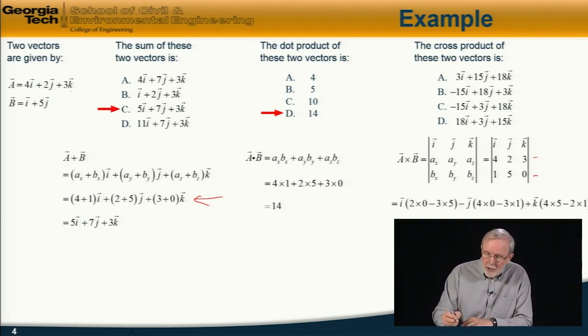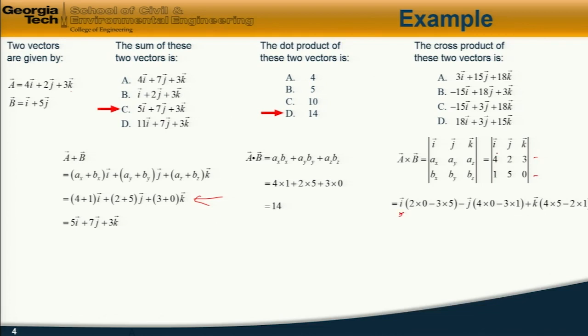So to compute this, we start with the i term here, i, cross out the row and column. And that is equal to 2 times 0 minus 3 times 5. Next, we form the j component. Cross that out. And again, because the signs alternate, that's going to be minus j multiplied by 4 times 0 minus 3 times 1. And finally, the k component, which is going to be positive, 4 times 5 minus 2 times 1. Expanding that out, we find that that is equal to minus 15i plus 3j plus 18k. And the answer is c.